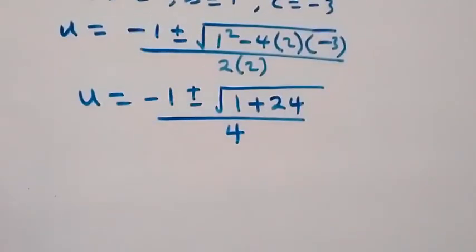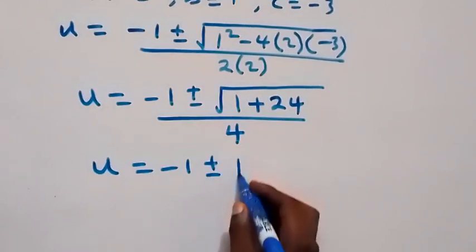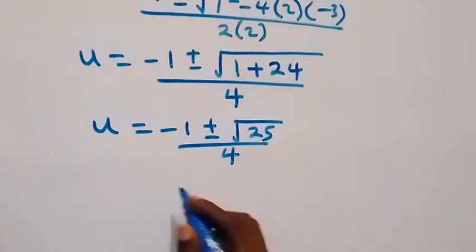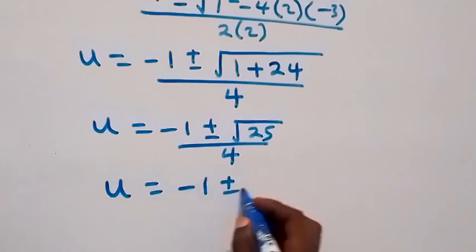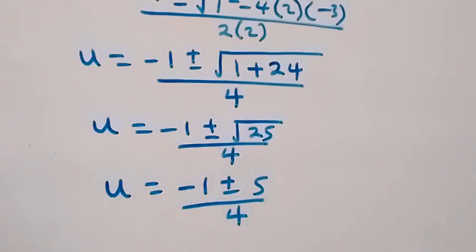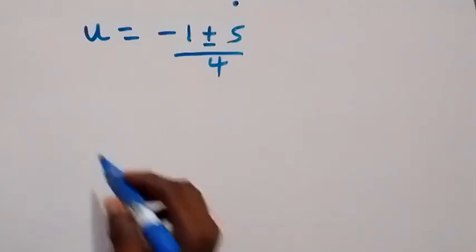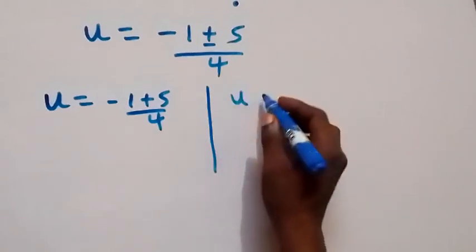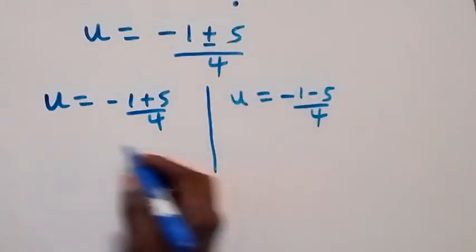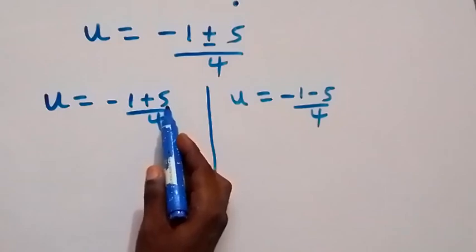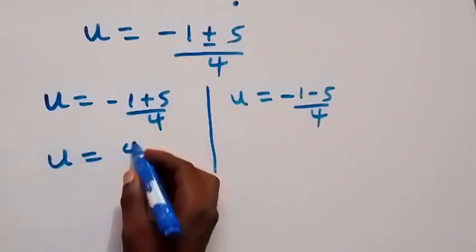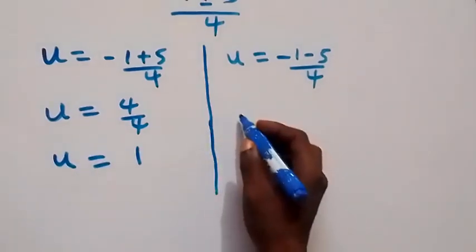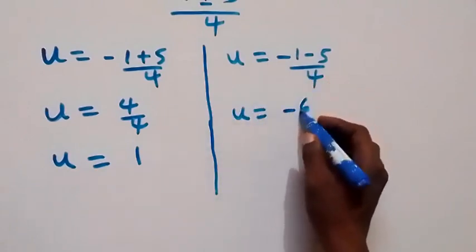Simplifying: u equals minus 1 plus or minus square root of 1 plus 24, which is square root of 25, all over 4. Square root of 25 is 5, so u equals minus 1 plus or minus 5 over 4. That gives us u equals 4 over 4, which is 1, or u equals minus 1 minus 5 over 4, which is minus 6 over 4.